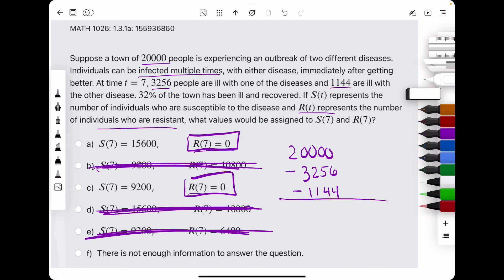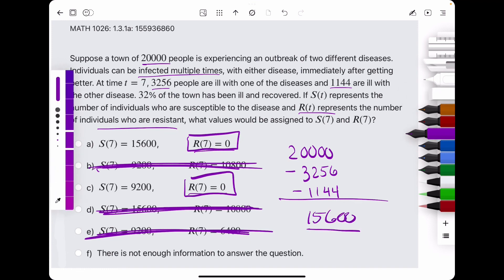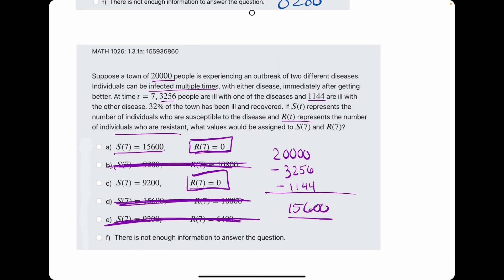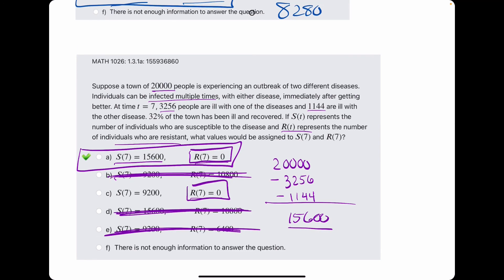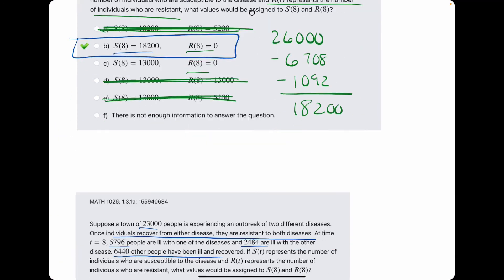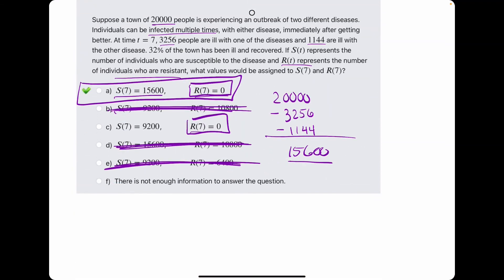Whoa. 15,600 as a value of susceptible people. So, we break out the eraser to see that A is, in fact, our answer. I hope this was a fair breakdown of these three problems. If you have any questions, please let me know.